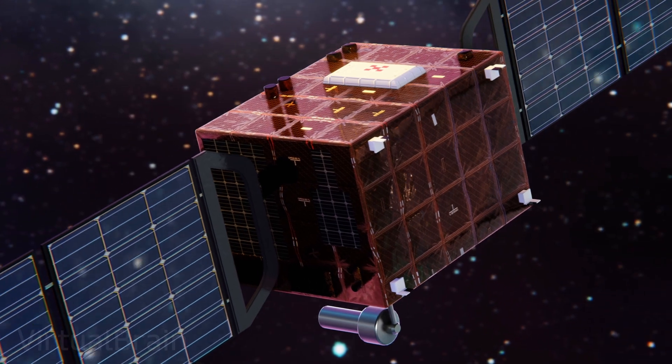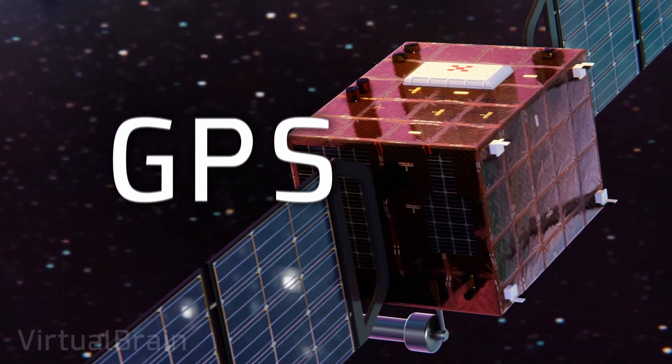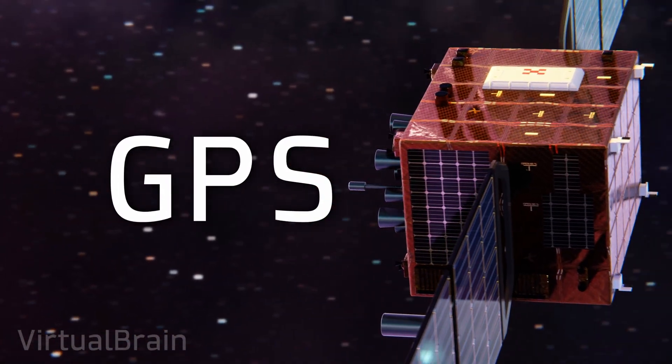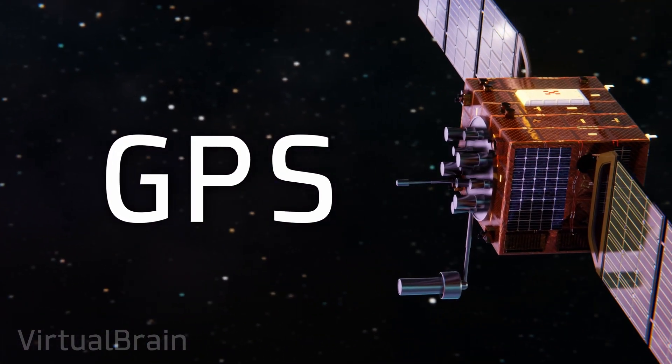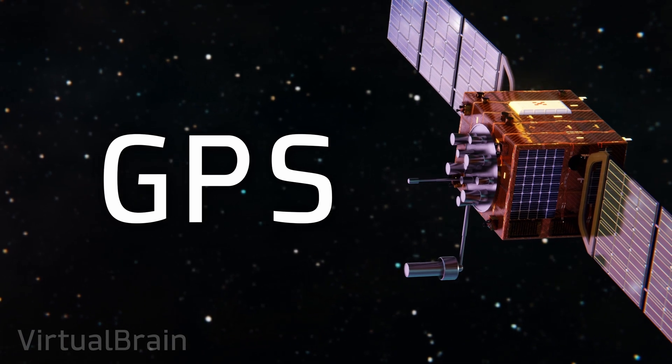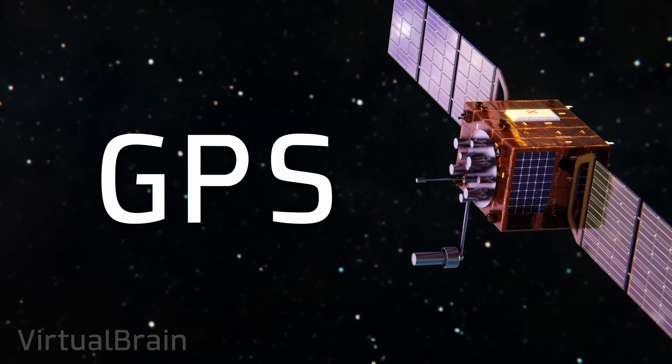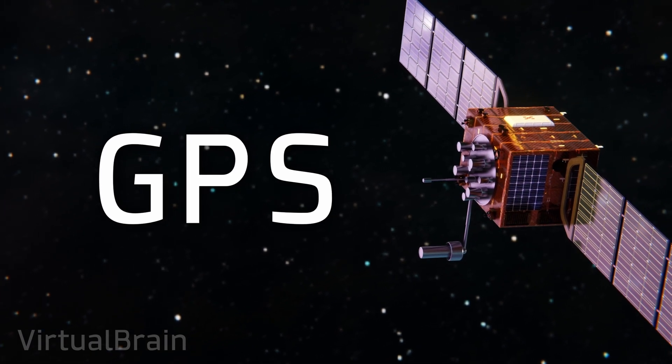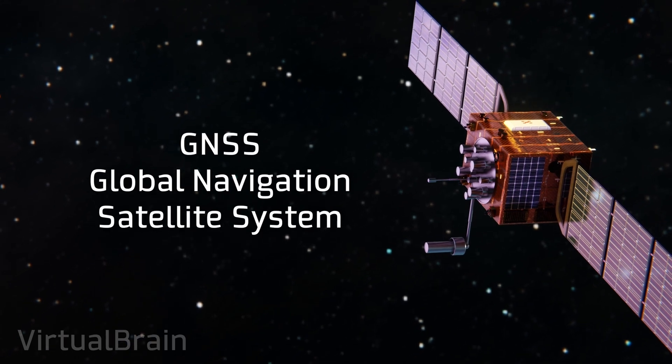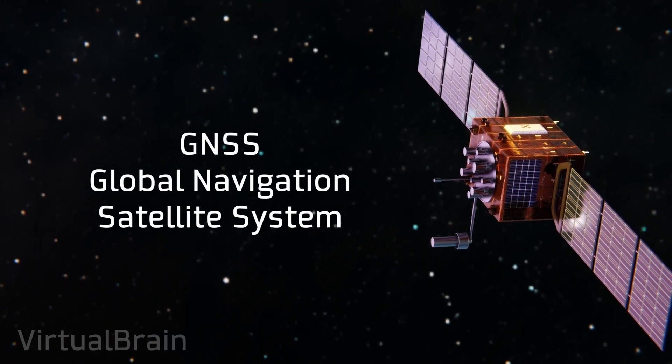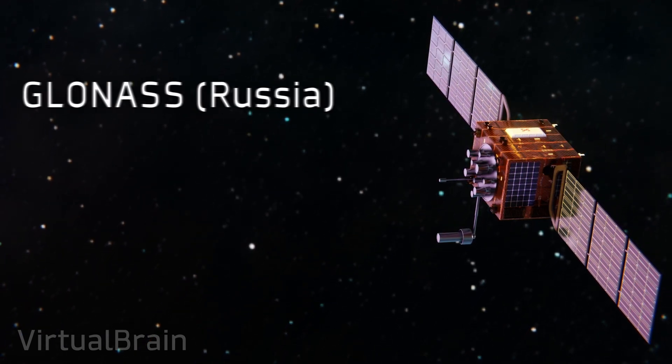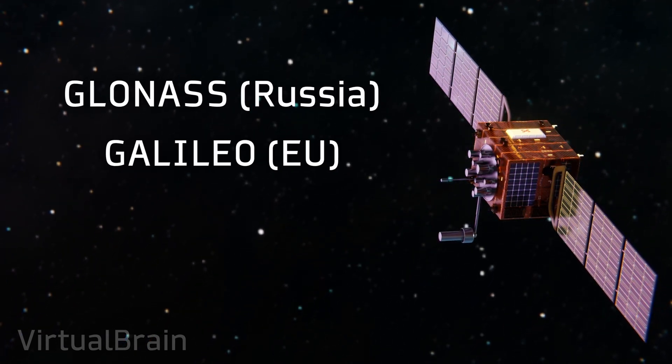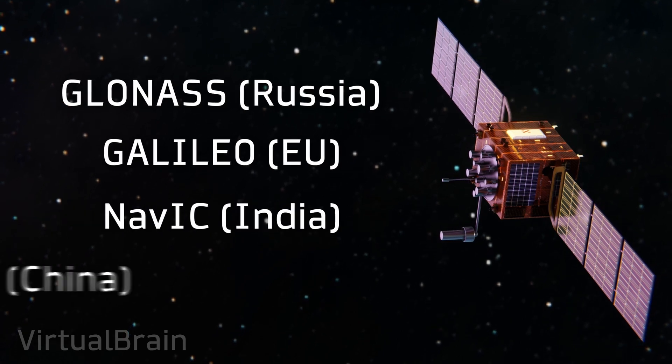The first thing to clarify before going into more detail is that GPS is a technology developed by the US Department of Defense, and that name refers only to the set of satellites that they manage. The generic name for this technology is actually GNSS or Global Navigation Satellite System and there are several other similar satellite networks, such as Russia's GLONASS, the European Union's Galileo, India's NAVIC and China's Beidou.